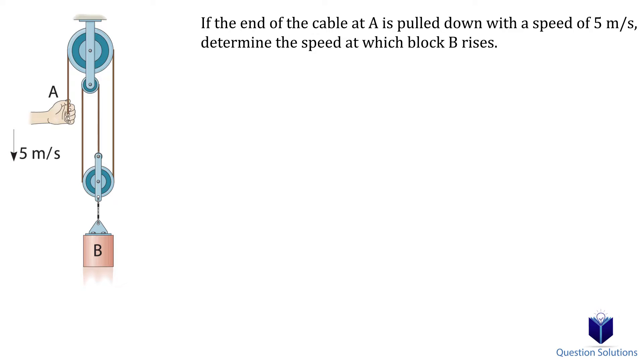So let's establish the datum at the top of the big pulley. We have one length SA and another length SB. We also have the length from the top pulley to the small pulley, which is held by the bar.